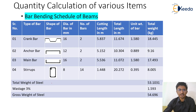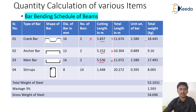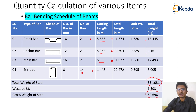All values are now compiled in a summary table: crank bar (16 mm dia, 2 nos, 5.837 m), anchor bar (12 mm dia, 2 nos), and main bar (16 mm dia, 2 nos) with their respective cutting lengths. Total lengths are multiplied by the unit weight formula d²/162 (d in mm) to get weights. Stirrups total 14 numbers (8 + 6) at 1.448 m each. Adding a 3% wastage, the total weight of steel comes out to be 54.969 kg.